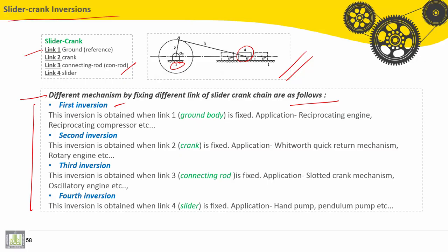This inversion is obtained when link number one is grounded, as shown in this figure. That means it's fixed. Application for this inversion: reciprocating engine, reciprocating compressor, etc.